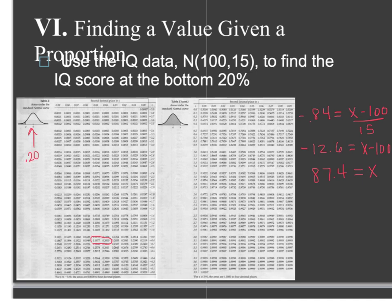That means that if you have an IQ that is below 87.4, you are in the bottom 20%. Anything below that is also in the bottom 20%.